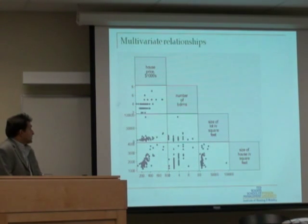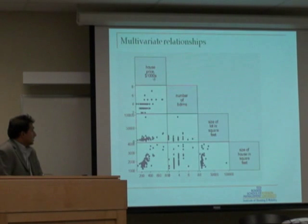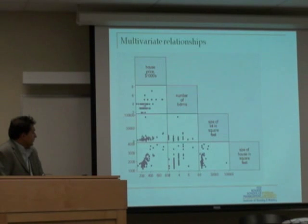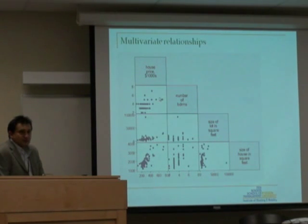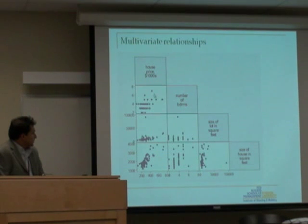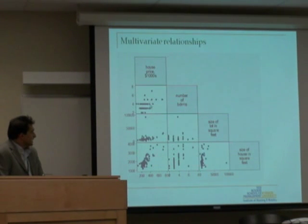I put housing prices at the top. As the number of bedrooms increases — from two to seven — you generally see a rising trend in housing prices, but not a linear relationship. The number of bedrooms suggests that average price increases with more bedrooms, but not as a definitive trend.